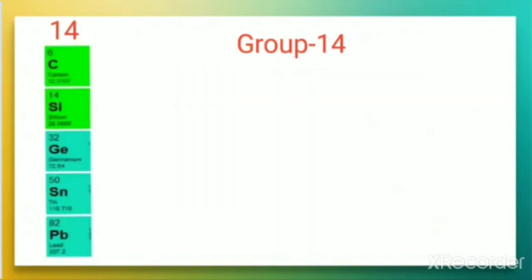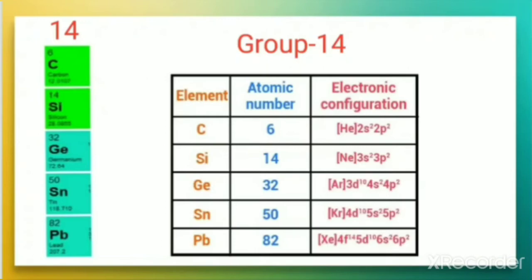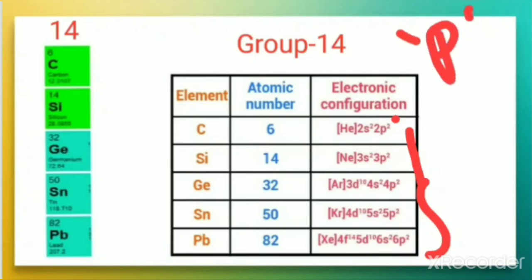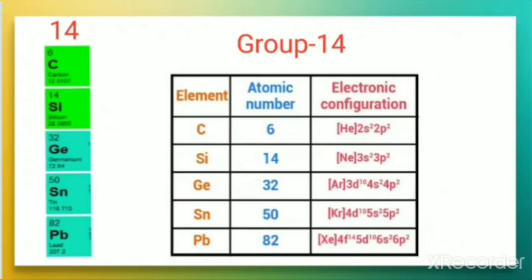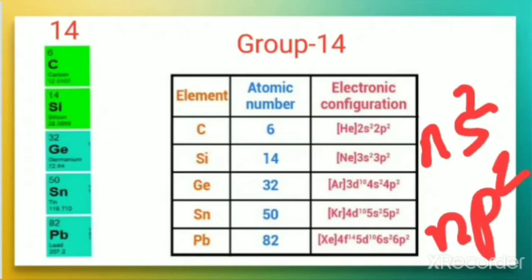Group 14 elements — carbon, silicon, germanium, tin, lead — also belong to the p block. In all these cases there are 2 electrons in the p orbital: carbon has 2s², 2p²; silicon has 3s², 3p²; germanium has 4s², 4p², and so on showing a similar pattern. The general electronic configuration for group 14 is ns², np².